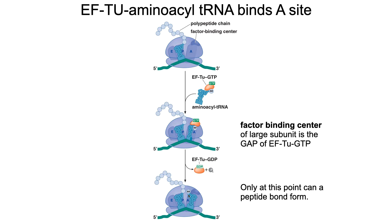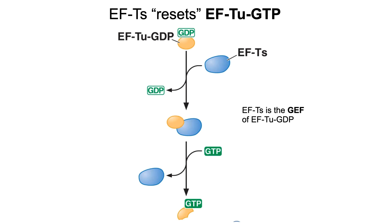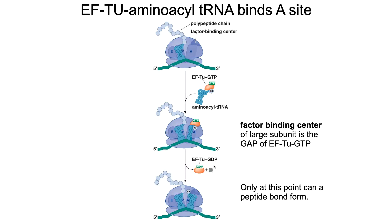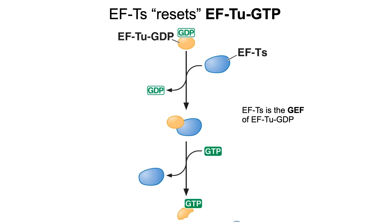Only at this point can peptide bond formation occur. To reset EF-Tu so it can protect another aminoacyl-tRNA, the GEF — which is EF-Ts — kicks out the GDP and brings in a new GTP, resetting EF-Tu so it can bind to another aminoacyl-tRNA.